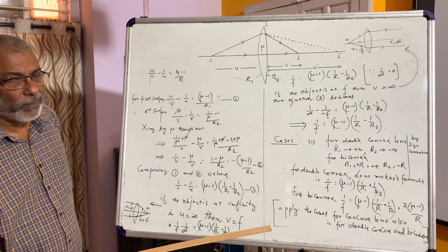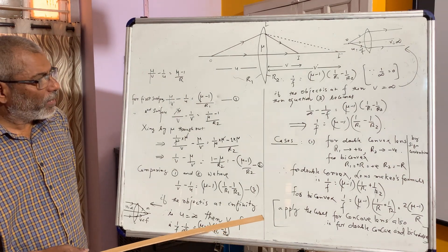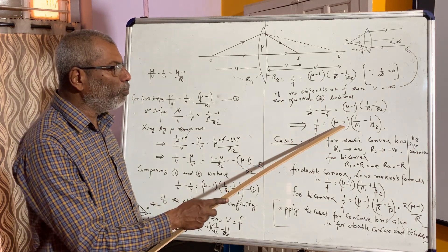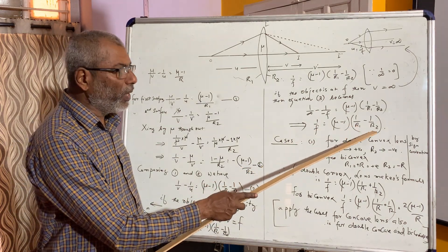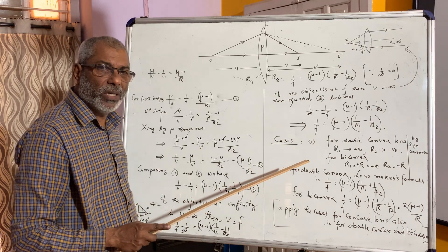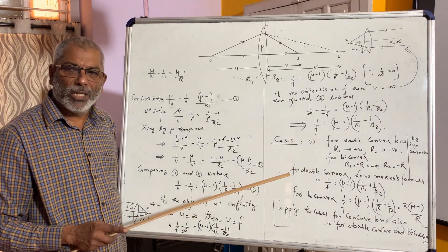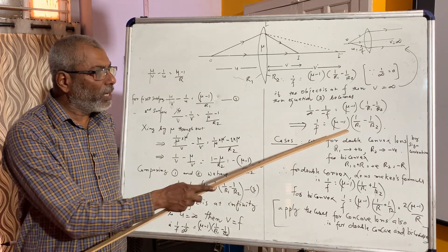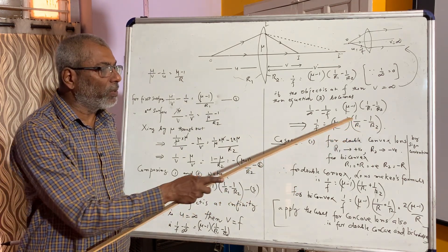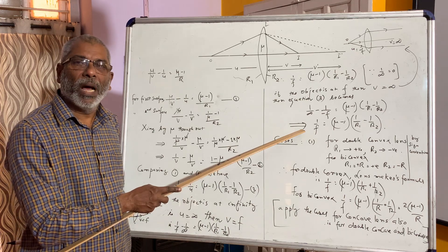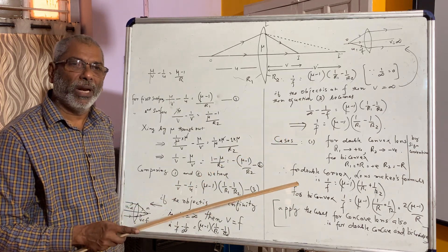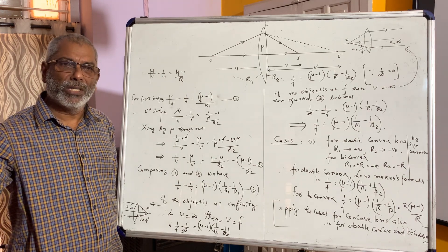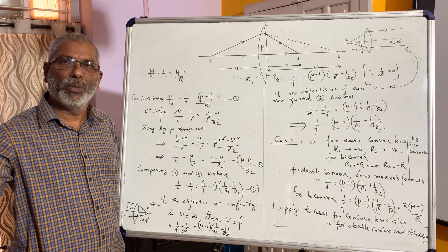Two cases have been applied, both giving the same result. From today you will remember this very famous equation: 1/F = (μ minus 1)(1/R1 minus 1/R2). This equation is called the lens maker's formula because, after a lens is manufactured, by calculating the radii of curvature R1 and R2, the manufacturer can calculate the focal length and write it on the wrapper — for example, 10 cm, 15 cm, 20 cm, etc.